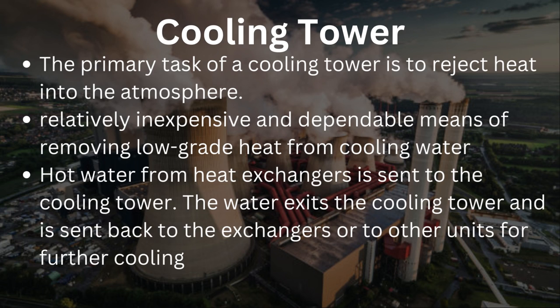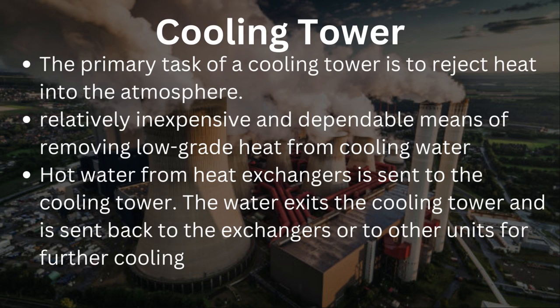Cooling towers are a very important part of many chemical plants. The primary task of a cooling tower is to reject heat into the atmosphere. They represent a relatively inexpensive and dependable means of removing low-grade heat from cooling water. The makeup water source is used to replenish water lost to evaporation. Hot water from heat exchangers is sent to the cooling tower, exits, and is sent back to the exchangers or other units for further cooling.